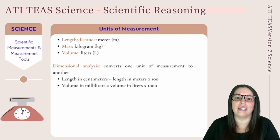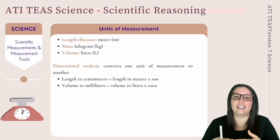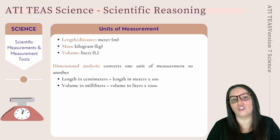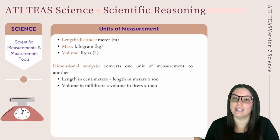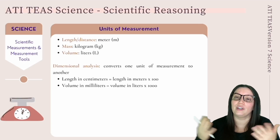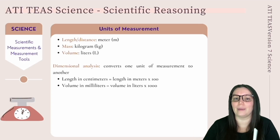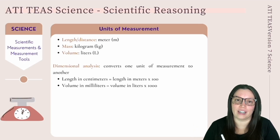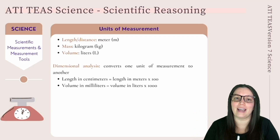We also use dimensional analysis to convert one unit of measurement to another, often done using a conversion factor, which is a ratio comparing two different units. For example, to convert meters to centimeters: length in centimeters equals length in meters times 100. To convert liters to milliliters: volume in milliliters equals volume in liters times 1,000.